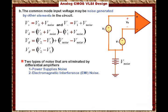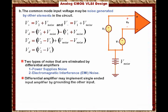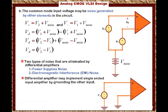Another important note: differential amplifiers may implement single-input amplifiers by grounding the other input. As shown in the graph for this differential amplifier, you can ground one input, and the other input becomes the differential input — essentially the input to the amplifier. In this case, Vd equals V1 minus 0, which is simply V1. So you can implement a single-input amplifier using a differential amplifier.